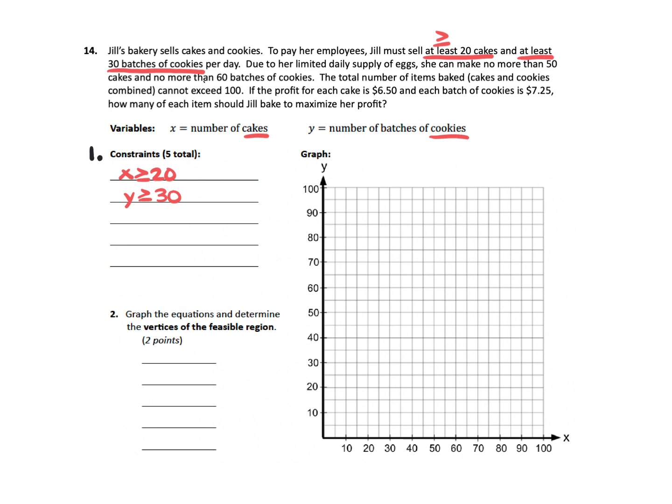Let's look at the next sentence now. Due to her limited daily supply of eggs, she can make no more than 50 cakes and no more than 60 batches of cookies. No more means you cannot go over that number, so we need to be less than or equal to. For cakes, cakes was X, so no more than 50 cakes, we're going to go X less than or equal to 50. And then for the no more than 60 batches of cookies, cookies is Y, so I need Y to be less than or equal to 60.